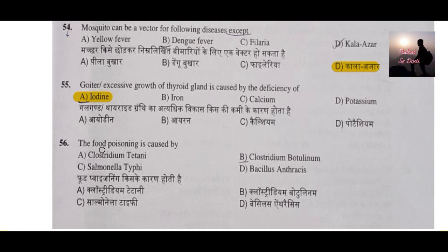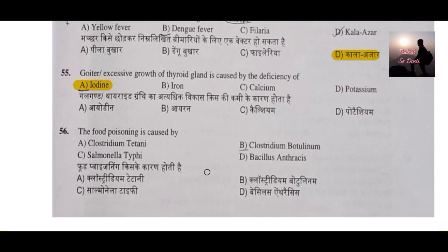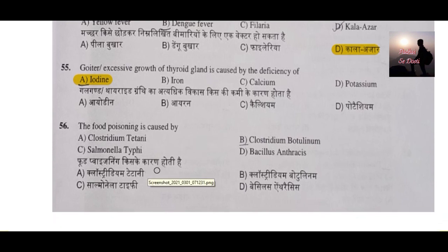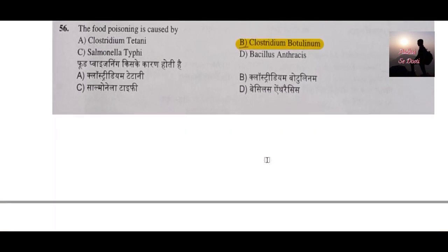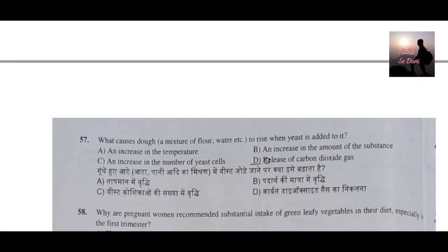Question number 56: Food poisoning is caused because of which of the following? The correct answer is option B — Clostridium botulinum. This element is responsible for food poisoning.